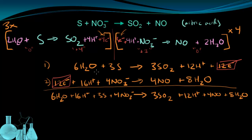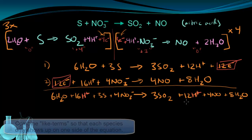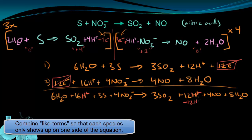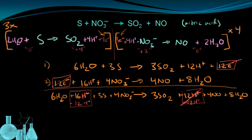Just like in algebra, I can combine like terms. I have H⁺ on each side and I only want it on one side. I subtract 12 hydrogen ions from each side — that eliminates the term on the right and changes the term on the left: instead of 16 hydrogen ions, I subtract 12 to get an overall four hydrogen ions remaining.